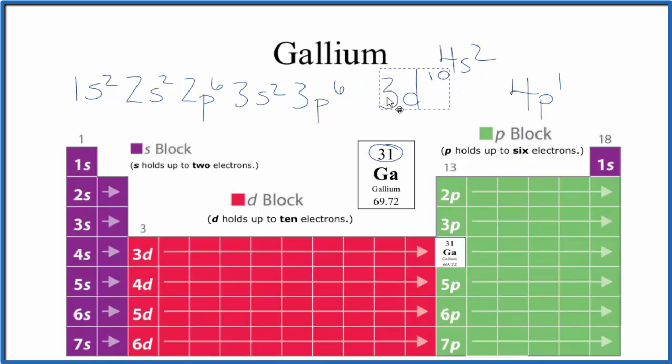So we have our electron configuration for gallium here. Often you'll see the 4s written after the 3d, which kind of makes sense. These are the valence electrons here. These are the ones that are going to be lost when gallium forms chemical bonds. So this is our electron configuration.